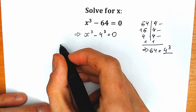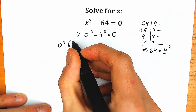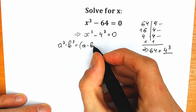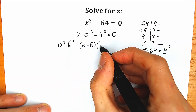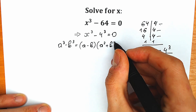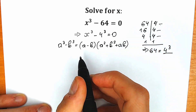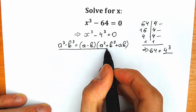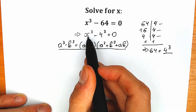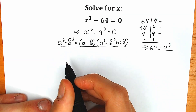Let's remember a school formula. We have a-cube minus b-cube equal to (a minus b) in the first parenthesis, and in another parenthesis we have a-square plus a-b plus b-square. This is our formula for the difference of two cubes. Now let's apply this formula: instead of a we write x, and instead of b we write 4.